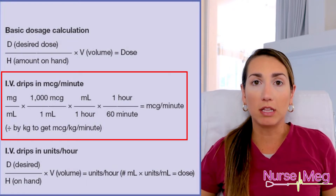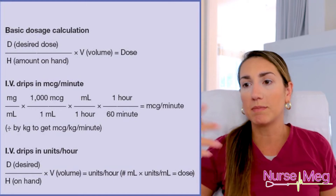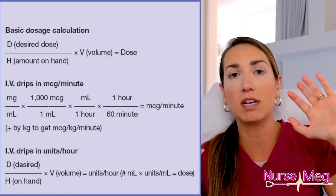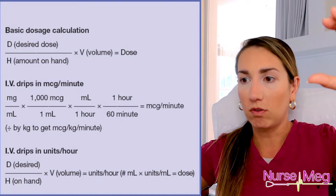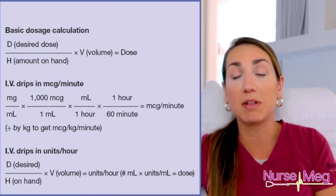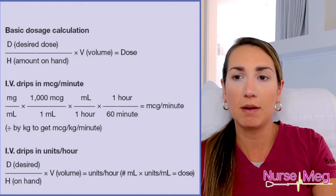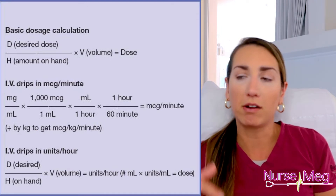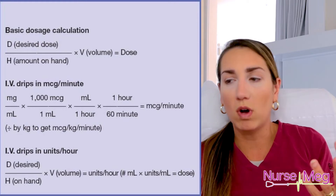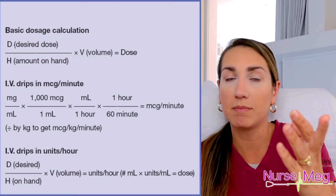IV drips are a little more complicated because it's not just how many mLs to give — it's going to be like how many micrograms per minute. That's going to require more calculation, so you'll need to know how to convert milligrams to micrograms and also convert time, usually from an hour to 60 minutes. For example: 50 milligrams per 100 mLs — convert to micrograms per minute by doing 50 times 1,000 (to get micrograms), times one hour, divided by the mLs it comes in, times 60 to get per minute. That gives you micrograms per minute.